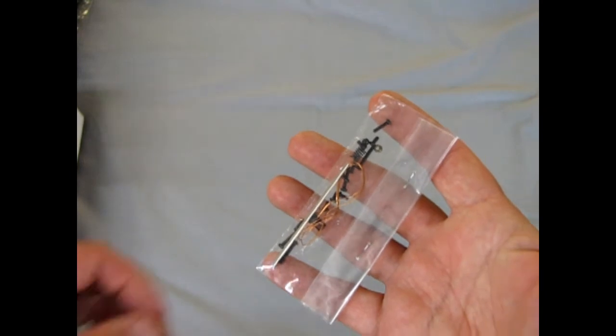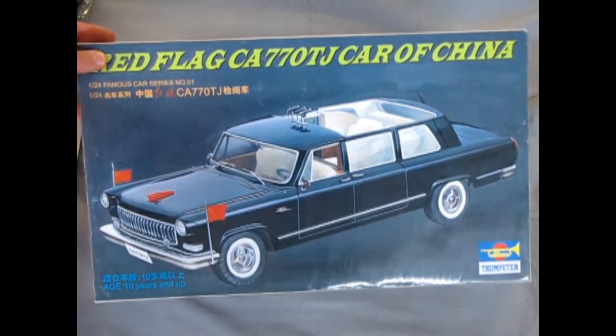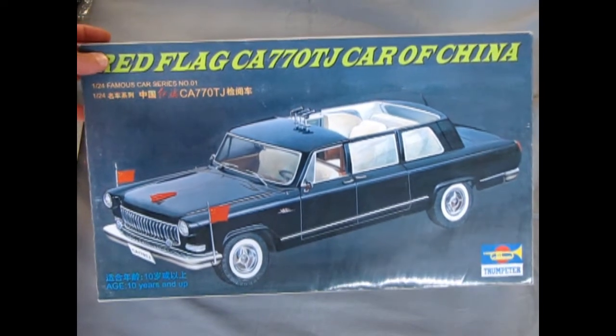And then, of course, our axle springs and screws that we need for the kit. And that will conclude our examination of the Red Flag CA-770 TJ car of China.